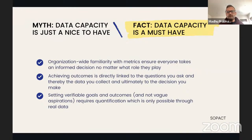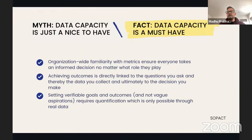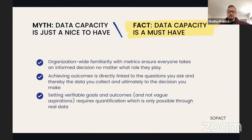Myth one: data capacity is just a nice to have — not really a must have. In our opinion, it's a must have. Working with so many organizations, we've seen that organization-wide familiarity with metrics ensures that everyone takes decisions with a higher likelihood of being right, regardless of their role. Different teams all have their own roles, but having that organization-wide familiarity with outcomes and metrics ensures there's a higher chance they'll make good decisions to move things forward.